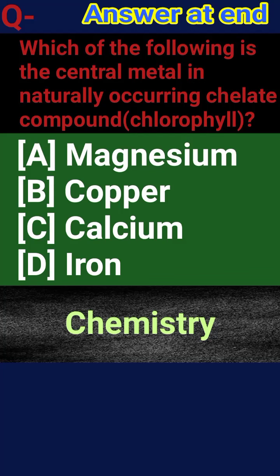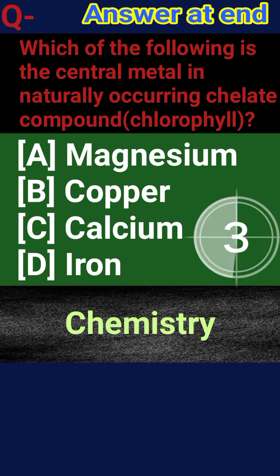Which of the following is the central metal in the naturally occurring chelate compound chlorophyll? a) Magnesium, b) Copper, c) Calcium, d) Iron.